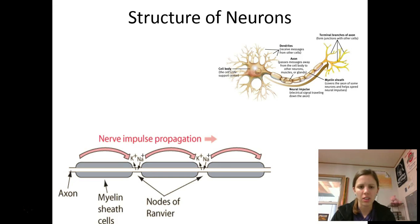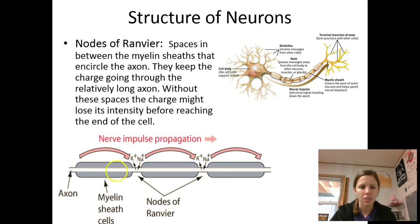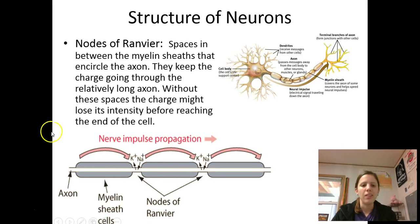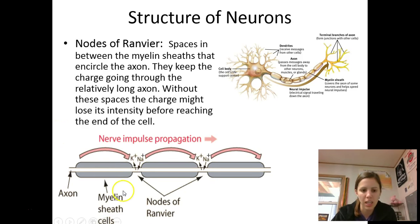The last structure of the neuron that I want you to write down are called the nodes of Ranvier. If you notice on the axon, it has little splits in it — little junctures — and if we magnify those you can see them here: these little splits in the axon are called nodes of Ranvier.